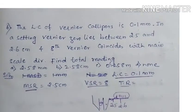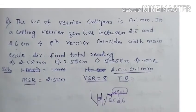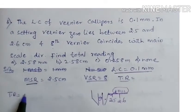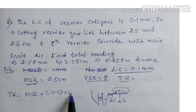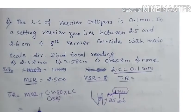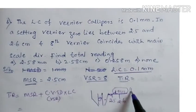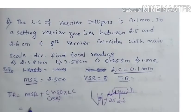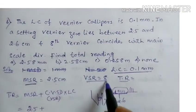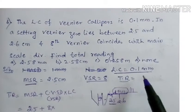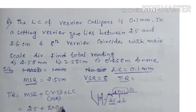Total reading is how much? We use the formula: total reading equals MSR plus coinciding vernier scale division into LC. Main scale reading is 2.5. Coinciding vernier scale division is 8. LC is 0.1 mm — but given in centimeters, so it becomes 0.01 cm.